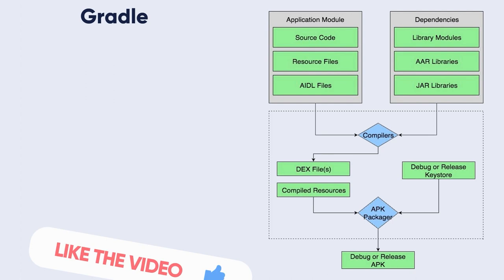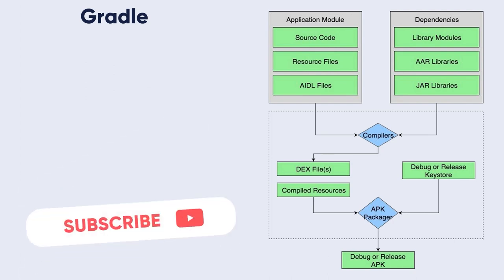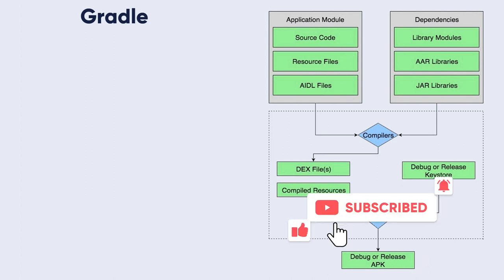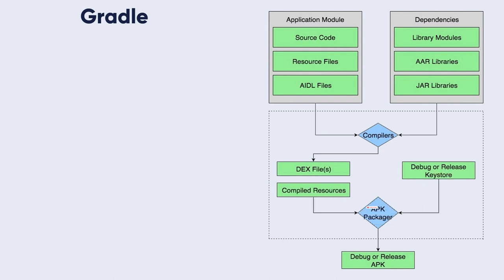The build process involves many tools and processes that convert your project into an Android Application Package (APK) or Android App Bundle (AAB). The build process is very flexible, so it's useful to understand what is happening under the hood — including the compilers, the DEX file compilation, compiled resources, and the keystore-to-APK packager producing the debug or release APK.